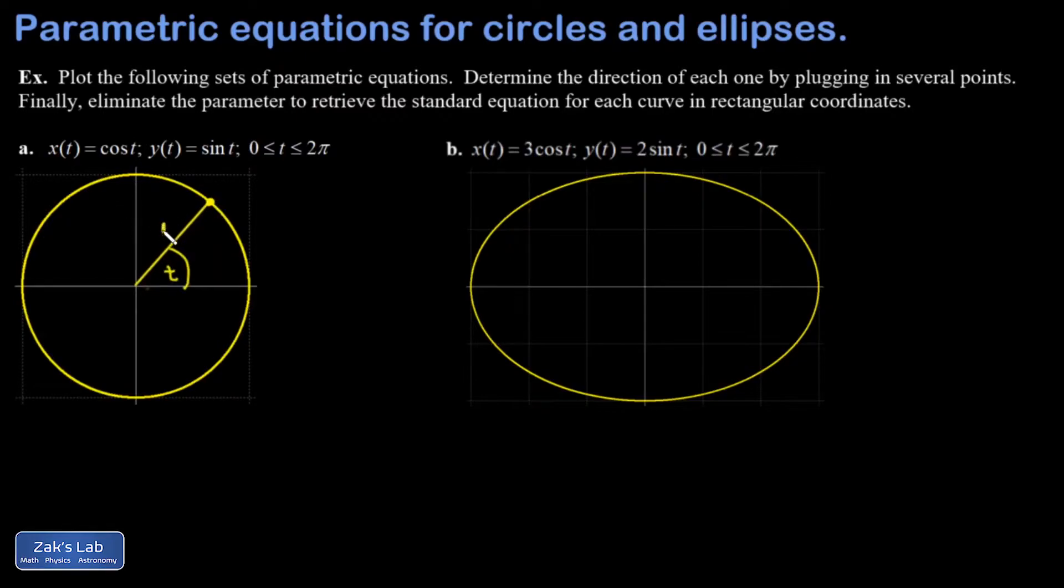If I call the angle t and the radius one, then the x coordinate of this point that I've highlighted is actually the definition of cosine t, and the y coordinate is the definition of sine t.